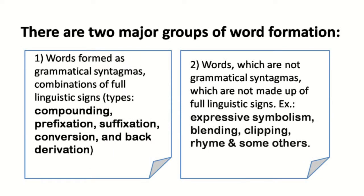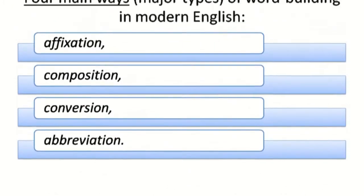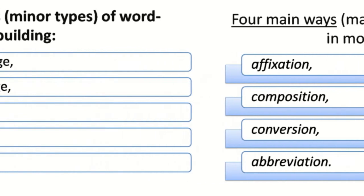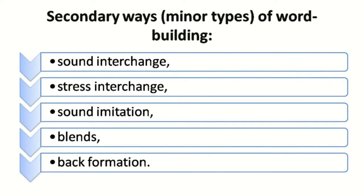There are two major groups of word formation. The first is words formed as grammatical syntagmas — combinations of full linguistic signs — with types including compounding, prefixation, suffixation, conversion and back derivation. The second group is words which are not grammatical syntagmas, such as expressive symbolism, blending, clipping, rhyme and others. The four main ways of word building are affixation, composition, conversion and abbreviation. The secondary ways are sound interchange, stress interchange, sound imitation, blends and back formation.